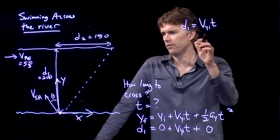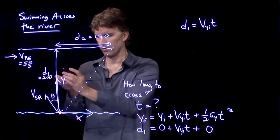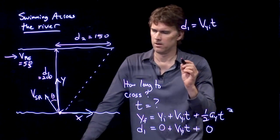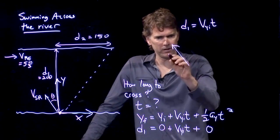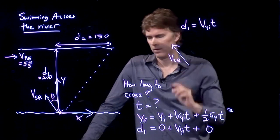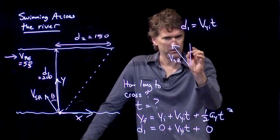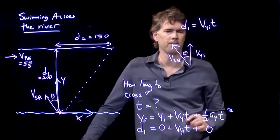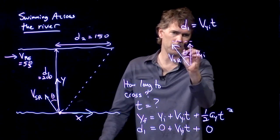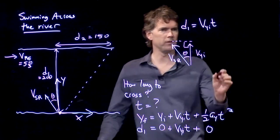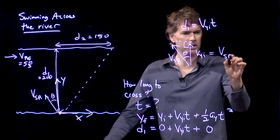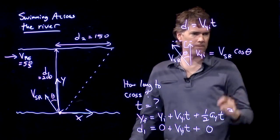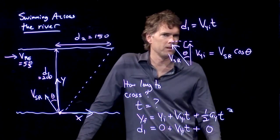v y initial is how fast is the swimmer going in this vertical direction, in this y direction. We don't know what that is, but what we do know is if this is the speed of the swimmer in that direction, then v y initial is right there. And this is a right triangle, and so we can say v y initial is just equal to the speed of the swimmer relative to the river times the cosine theta.